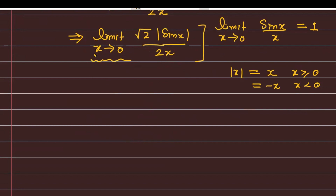देखें — आपको question में दिया है कि limit tending to 0 निकालनी है। Tending to 0 का मतलब है 0 के closer — it may be greater than 0 or less than 0. क्योंकि यहाँ पर mod का function है, तो मैं directly limit नहीं निकाल सकता। मुझे check करना पड़ेगा कि 0 के right में क्या हो रहा है और 0 के left में क्या हो रहा है — क्योंकि sin x, 0 के बाद positive होता है और 0 से पहले negative होता है।